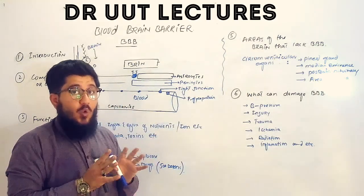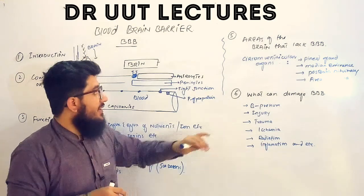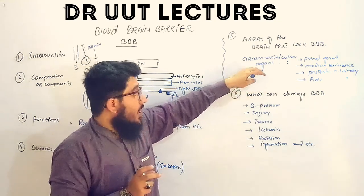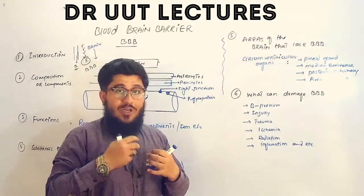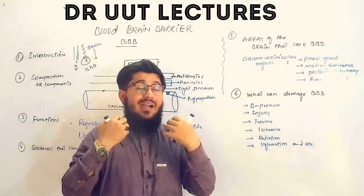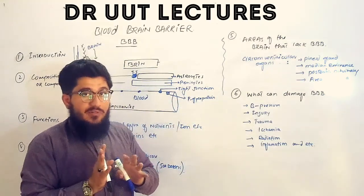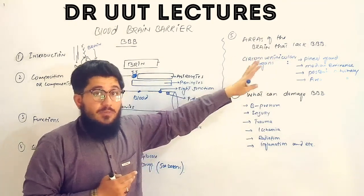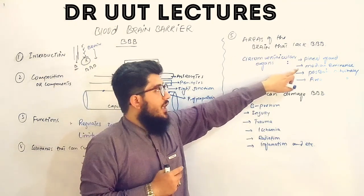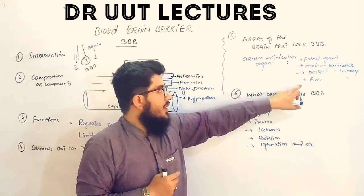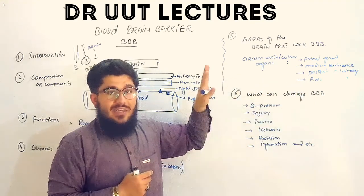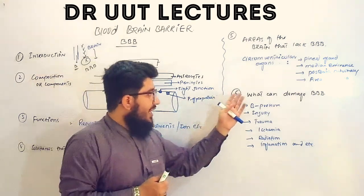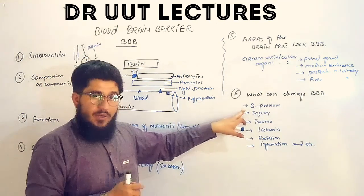Now let's look at the areas of the brain that lack the blood brain barrier. These areas are called the circumventricular organs — organs located around the ventricles. The brain has four ventricles: the lateral ventricles, the third ventricle, and the fourth ventricle. The areas that lack the blood brain barrier include the pineal gland, the median eminence of the hypothalamus, the posterior pituitary, and the area postrema.